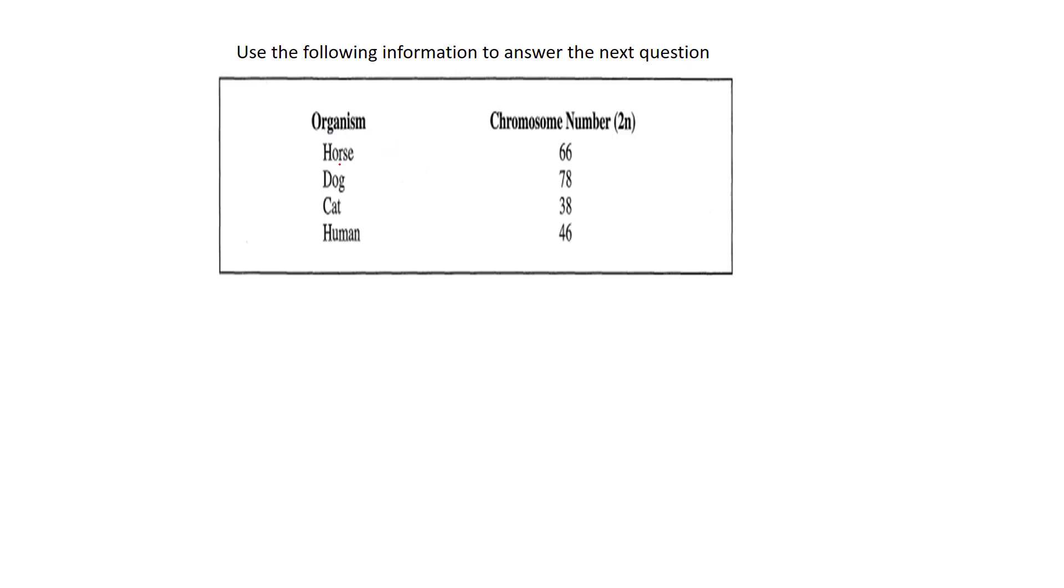It talks about some organisms: horse, dog, cat, and human, and their chromosomal number for the diploid state, for the diploid cell. So there's multiple things going on here. When it says 2n, that tells me there's homologous pairs within that cell. We know 2n is diploid—that's what the 2 indicates. And we know that diploid cells are somatic cells. Somatic cells are all the cells in the body with the exception of sex cells. There's only two types: somatic and sex.